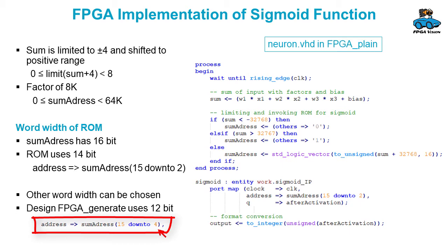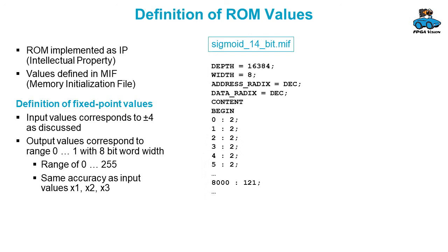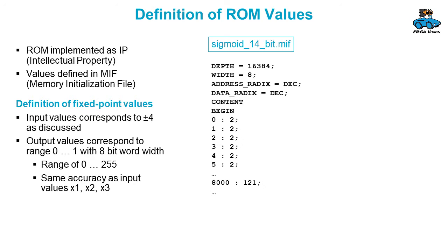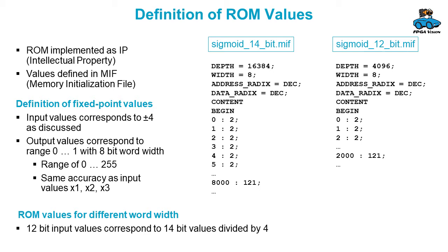The ROM is implemented as an intellectual property, and the values for the ROM are defined in a so-called memory initialization file. You get the addresses on the left side and the output data on the right side. The input values correspond to plus minus four as discussed, and the output values correspond to a range of 0 to 1 with 8 bit word width, so a range of 0 to 255. This is the same accuracy as the input values x. If you have a different word width, the MIF file is also changed.